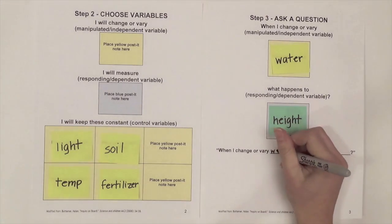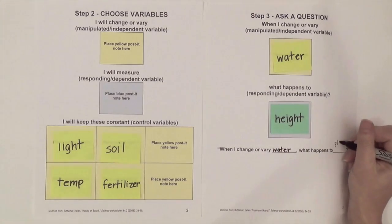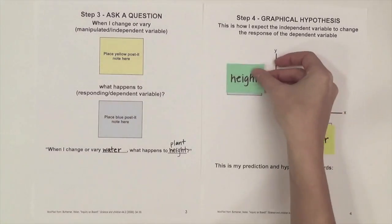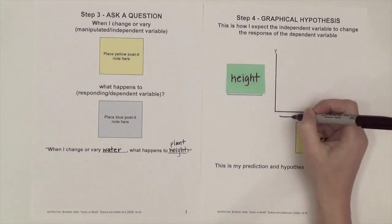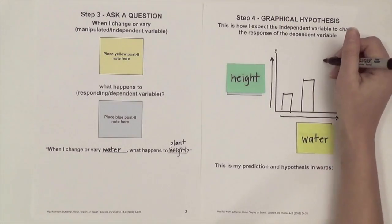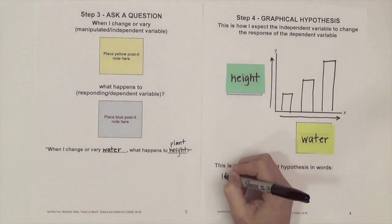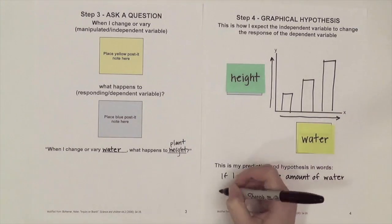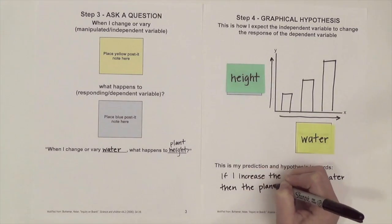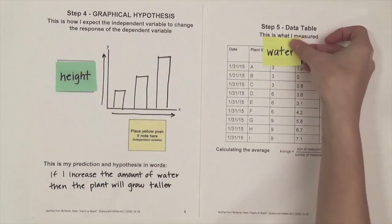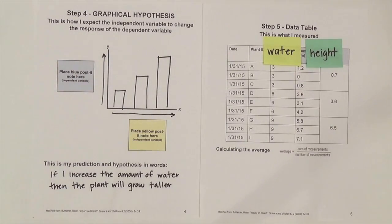Our scientific question is: when I change the amount of water, what will happen to plant height? With the next inquiry board, we'll draw using a graph and then write out in words our hypothesis. We're predicting in our experiment that plants that get more water will grow taller.